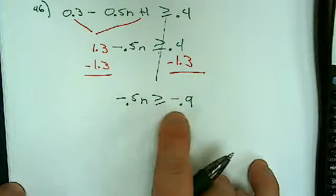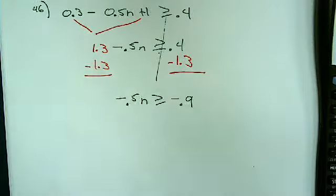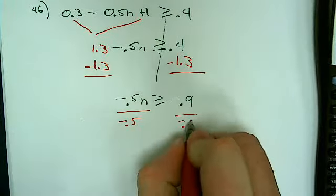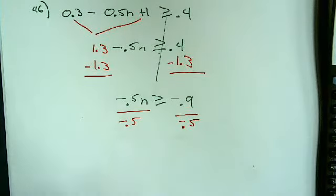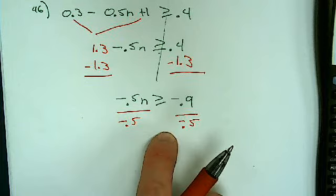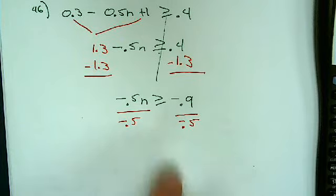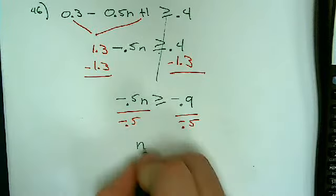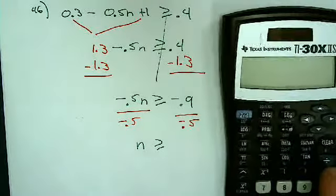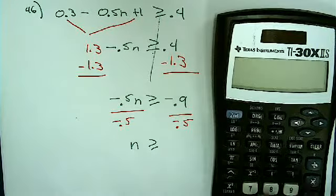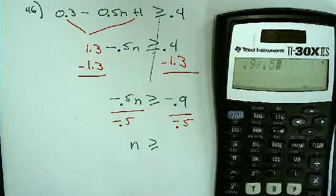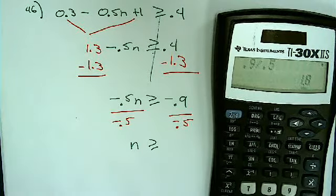Now I'm going to divide, right? Somebody. Do I switch the sign here? Yes. Why? Divided by a negative, so I switch the sign. And now since I'm not real good with my decimals, I'll break out the calculator. Let's see. 0.9 divided by 0.5 gives me 1.8.